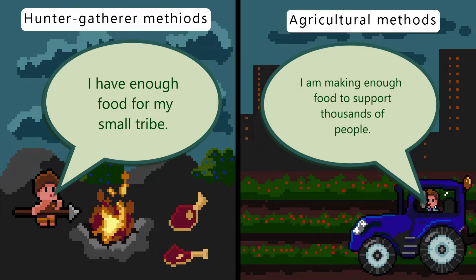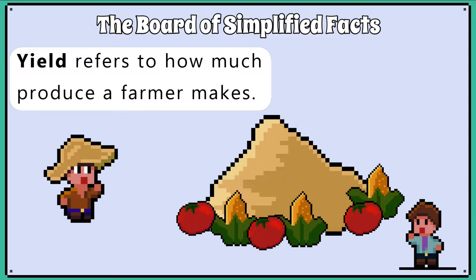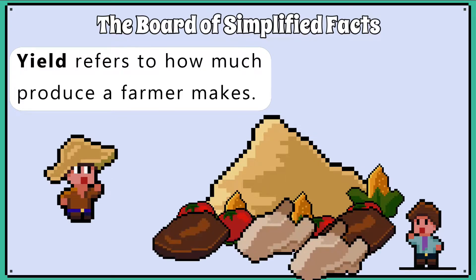Food production for human needs is provided by farming. Farming is what allowed humans in the first place to grow in such numbers because farming methods can produce a lot of food for the space they use. Yield refers to how much produce a farmer makes — more crops, more yield; more meat, more yield.